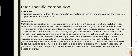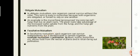Rhizobia bacteria are an example of nitrogen-fixing bacteria and they live within the root nodules of legumes. The bacteria produce ammonia which is absorbed by the plant and used to produce amino acids, nucleic acids, protein, and other biological molecules necessary for growth and survival. The plant provides a safe environment and adequate nutrients for the bacteria to grow. There are two types of mutualism: obligate and facultative.